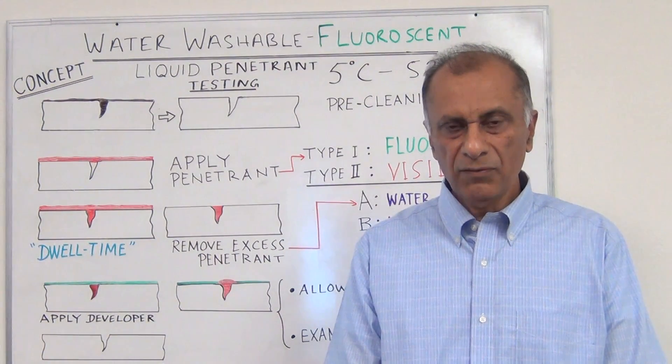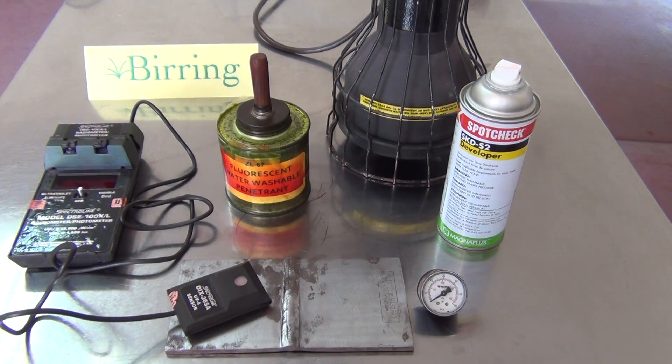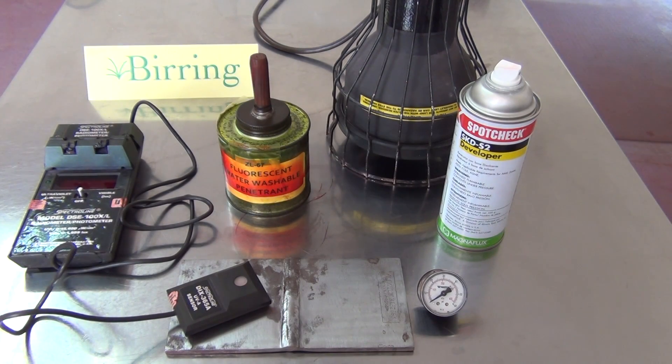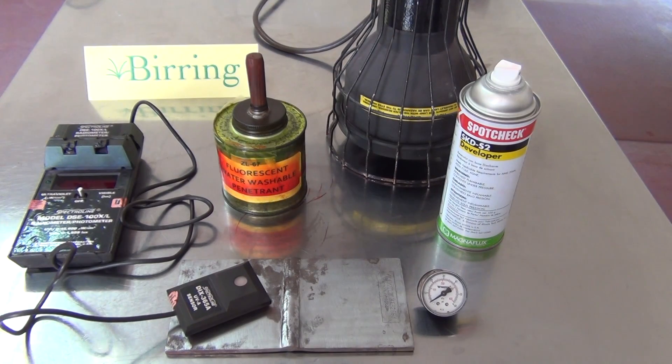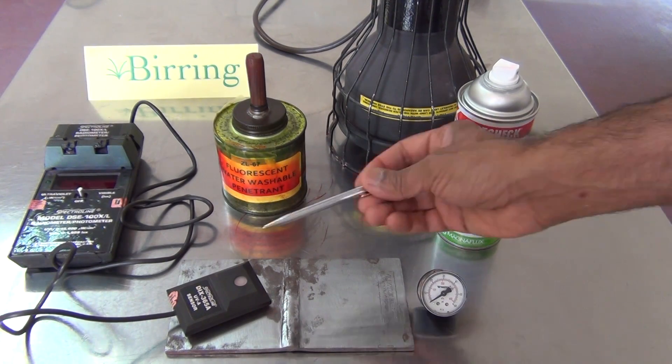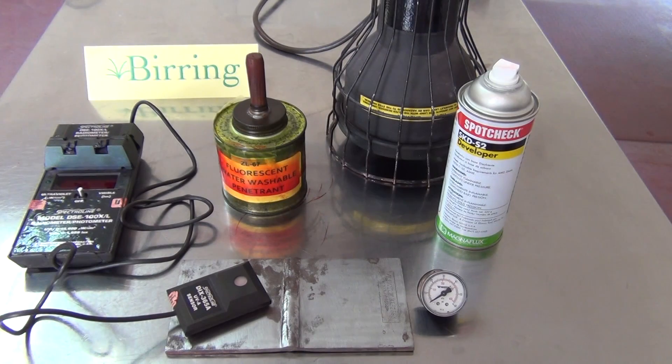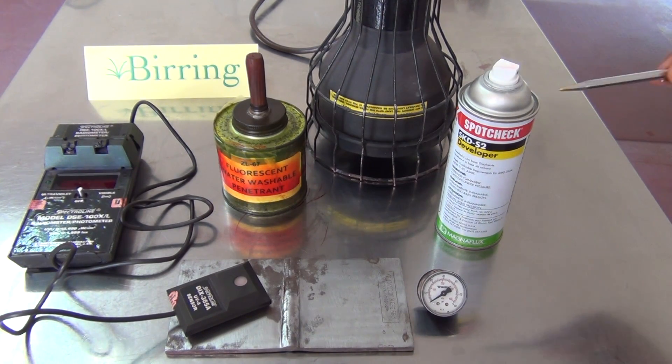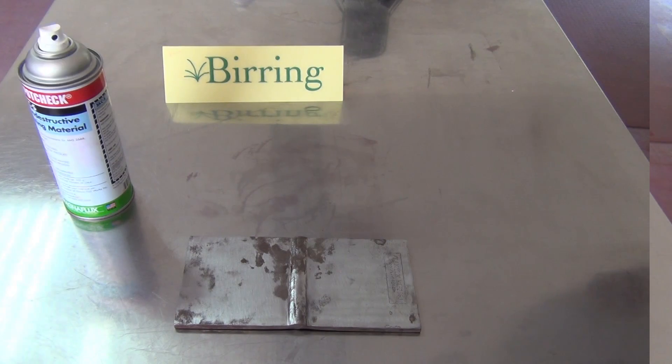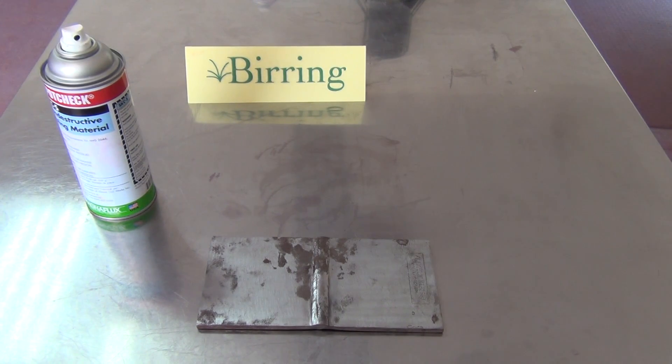The following is the basic equipment for water washable fluorescent test method. Here is the penetrant - it's ZL 67, sensitivity level 3. A light meter to check the light intensity of the fluorescent light. Here is the fluorescent light. Then we will also need a pressure gauge to check the water pressure, and finally a developer which is shown right here.